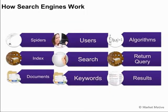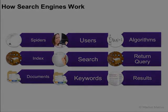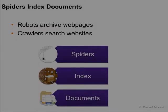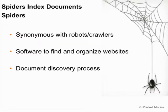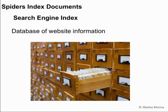As we dive deeper, we see synonymous terms associated with SEO jargon. Spiders are also called robots or crawlers — all synonymous with search engine spiders. They crawl the web, hence 'crawlers.' They're software to find and organize websites, creating that index — that database of information. Spiders are the document discovery phase: they find websites and crawl to other sites, or they find a sitemap and crawl to another webpage, indexing those into the database.